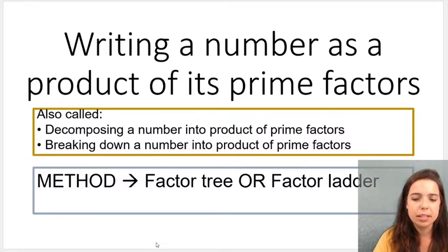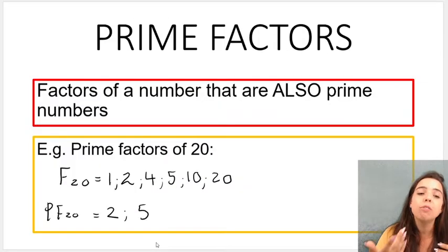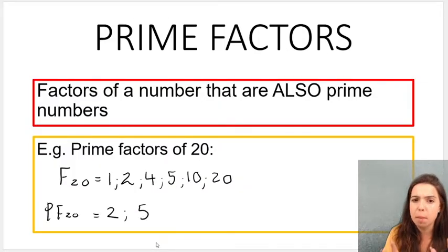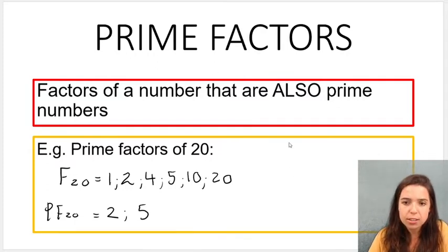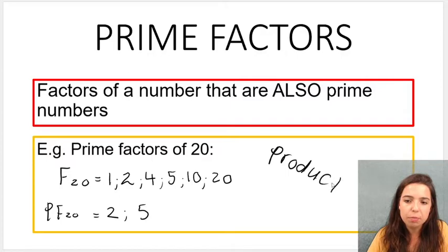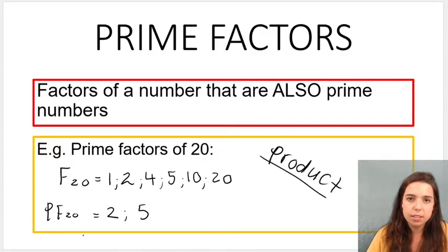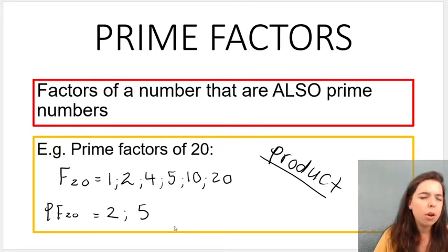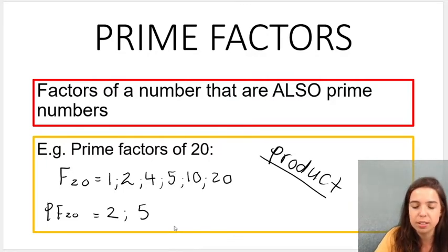So what I mean by this is we've discussed that 2 and 5 are prime factors of 20, but product means multiply. You guys should know that. Product, the word product, means to multiply. If I look at the prime factors of 20, 2 and 5, if I multiply those together, I don't get 20. So what do I mean by products of prime factors?